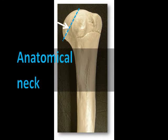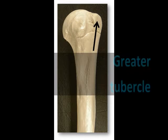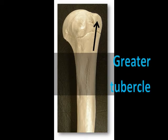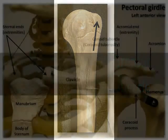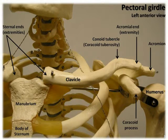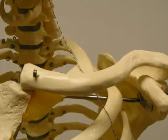The anatomical neck is the remnant of the epiphyseal growth plate that was once active in the growing bone. The greater tubercle is a lateral projection distal to the anatomical neck. You can feel this bump if you palpate on the lateral side of your shoulder area, just inferior to the acromion of the scapula, which is also palpable.